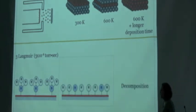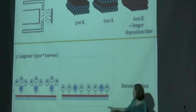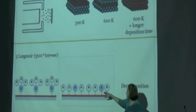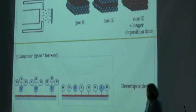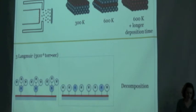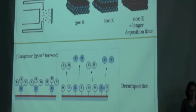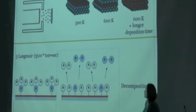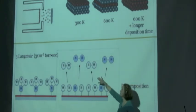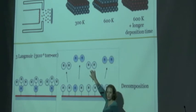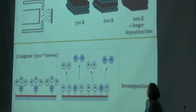But if decomposition happens on the surface, then the nitrogen-hydrogen bonds will break, and you have atomic nitrogen and hydrogen on the surface — which is the reaction we want to see happen. When we heat up the surface, what comes off is nitrogen and hydrogen, so we'll see mass 28 and mass 2 coming off.